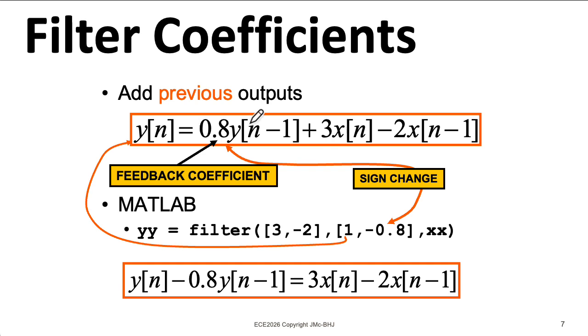So for this kind of filter, you might think about the coefficients as being 1, 0.8, if you're thinking about this kind of form up here, and you're writing a_0, a_1. Or you might think about this as containing the filter coefficients. So when people talk about the feedback coefficients of an IIR filter, you need to check to see what convention they're using.